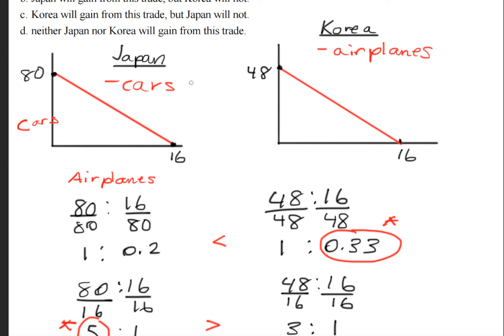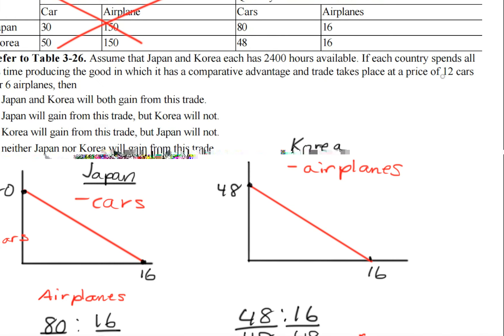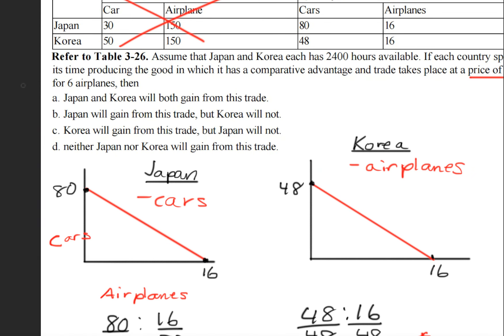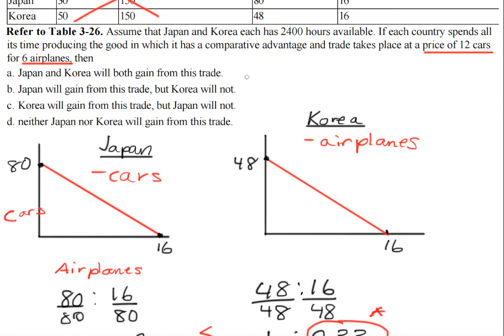So Japan is going to trade cars because that's what it will specialize in, and Korea will trade airplanes because that is what it specializes in. How much they trade was given in the question: Japan will give up 12 cars in order to gain 6 airplanes, and Korea will give up 6 airplanes to obtain 12 cars.